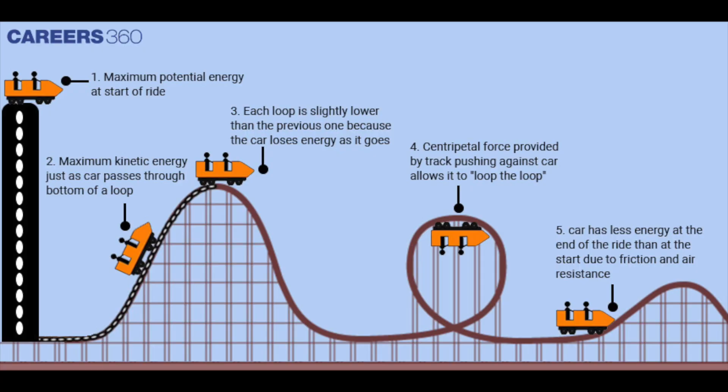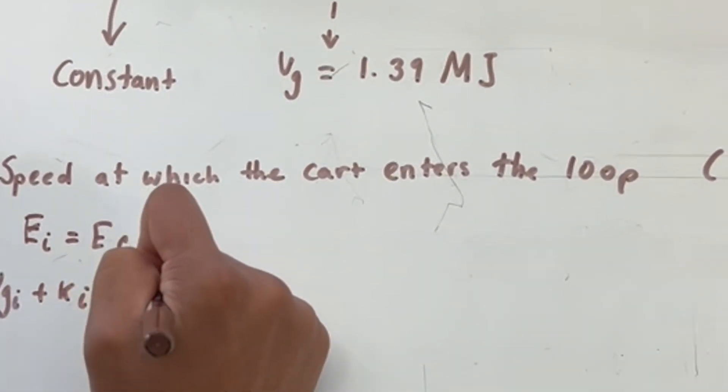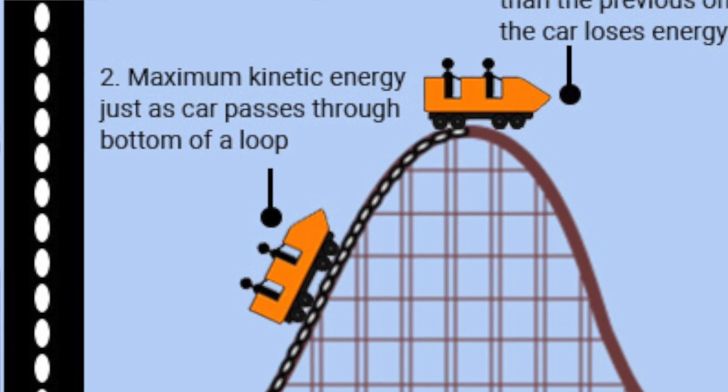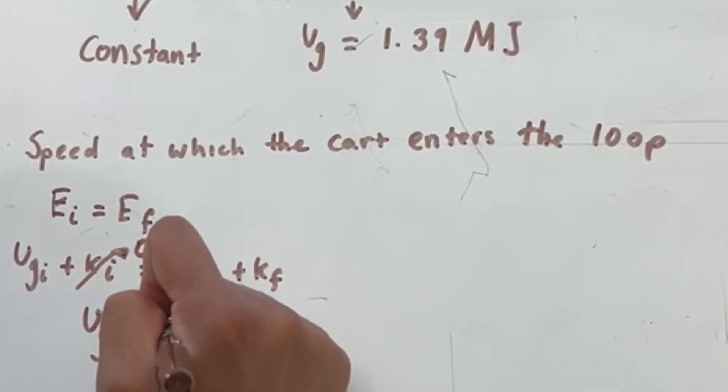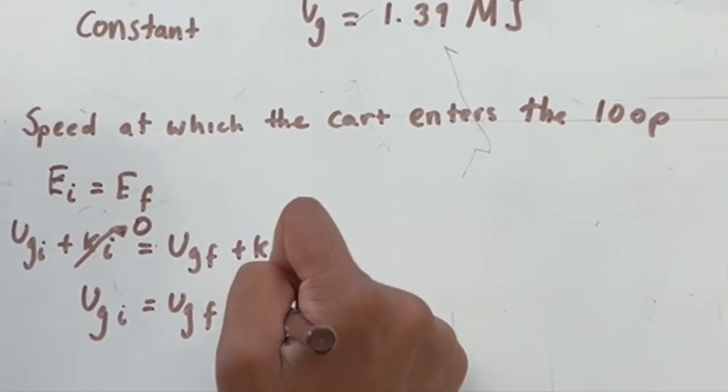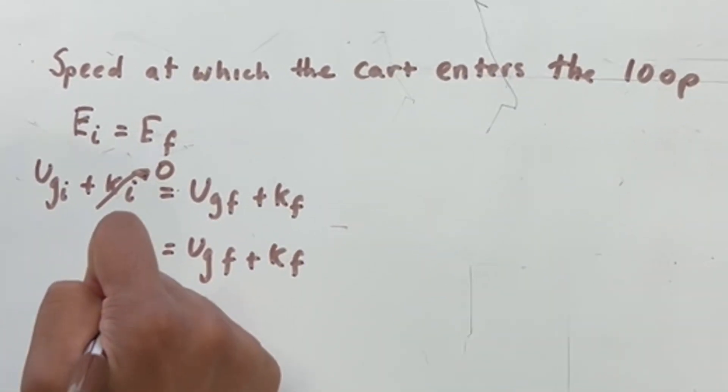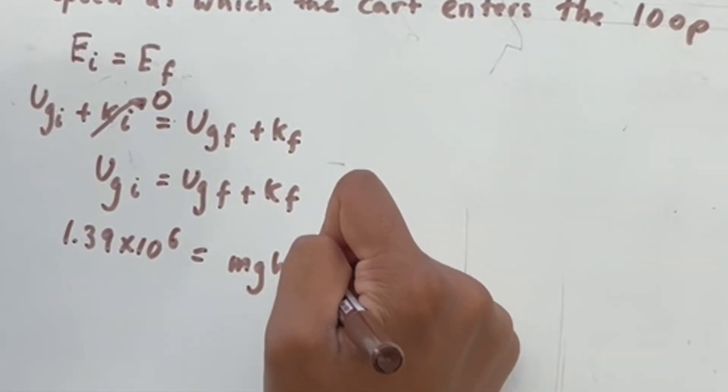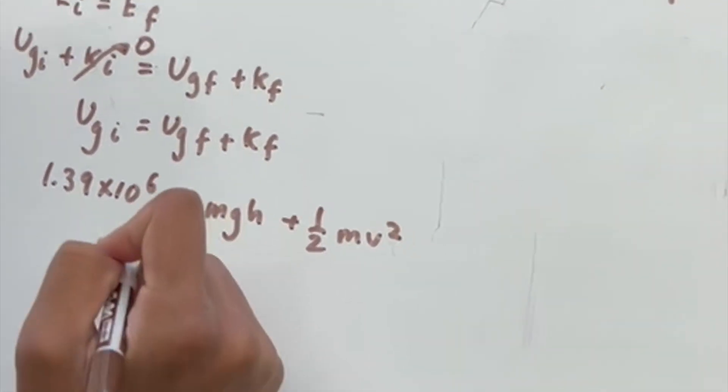We can use conservation of energy to find this, with the initial energy equal to the final energy, or the initial gravitational potential energy plus the initial kinetic energy equal to the final gravitational potential energy. Since the initial kinetic energy is zero at the top, we can just use simple algebra to find out the final velocity.